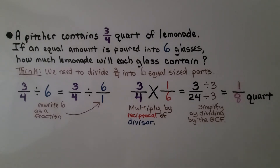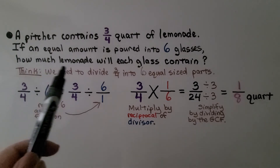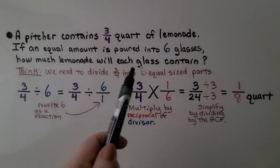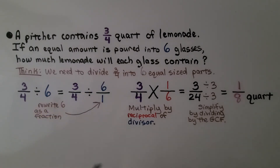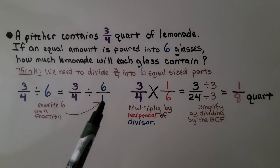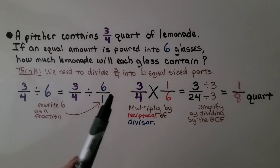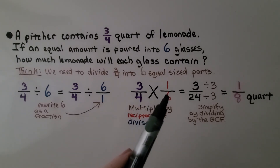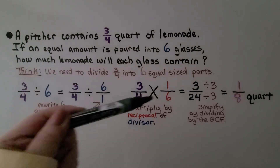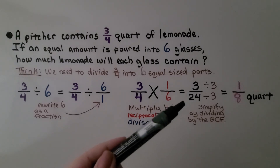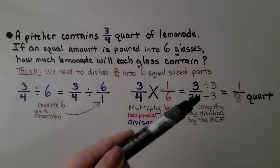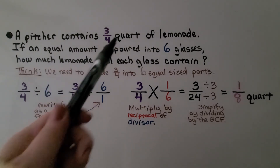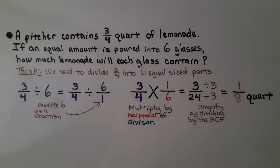Here we have a word problem. A pitcher contains three-fourths quart of lemonade. If an equal amount is poured into six glasses, how much lemonade will each glass contain? We need to divide three-fourths into six equal sized parts: three-fourths divided by six. We rewrite six as a fraction — six over one — then multiply by its reciprocal, one-sixth. Multiplying straight across: three times one is three, four times six is twenty-four. We have three twenty-fourths. We simplify using the greatest common factor of three, giving us one-eighth quart. So each glass will have one-eighth quart.